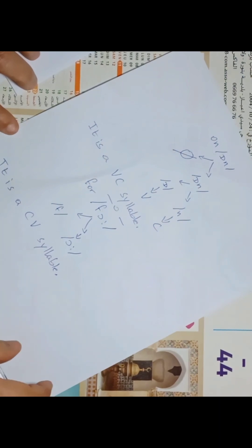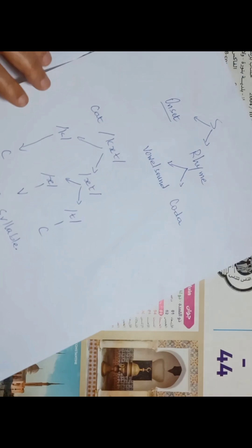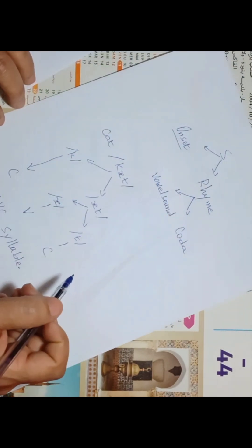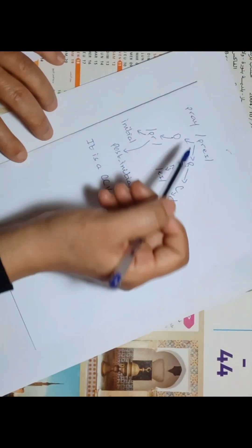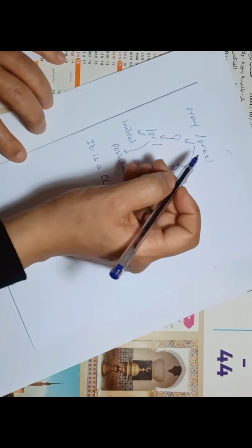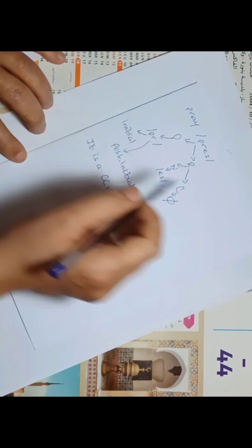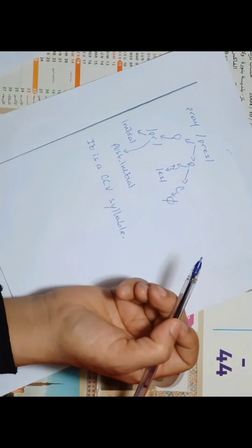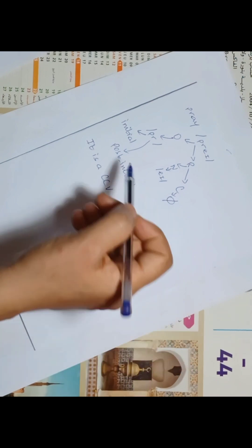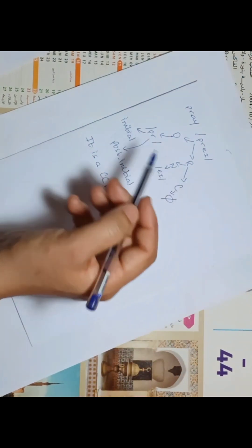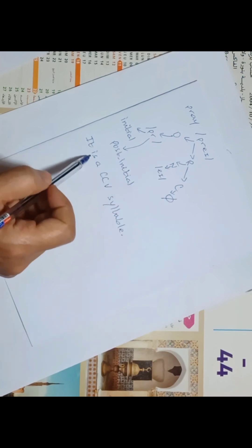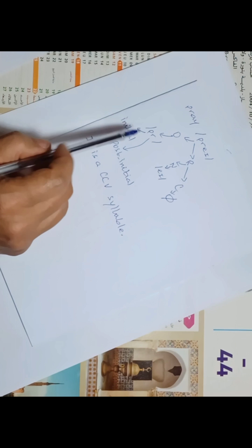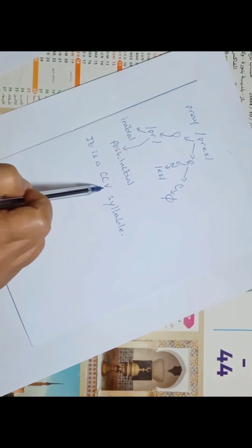Sometimes we find more than one consonant sound at the beginning. For example, take 'pray'. Here we have the onset, which is composed of /p/ and /r/, and the rhyme, which is composed of the vowel sound /eɪ/, and zero coda. But here, there is a rule. /p/ is initial, /r/ is post-initial, and it is a CCV syllable. /p/ is a consonant sound, /r/ is a consonant sound, and /eɪ/ is a vowel sound.